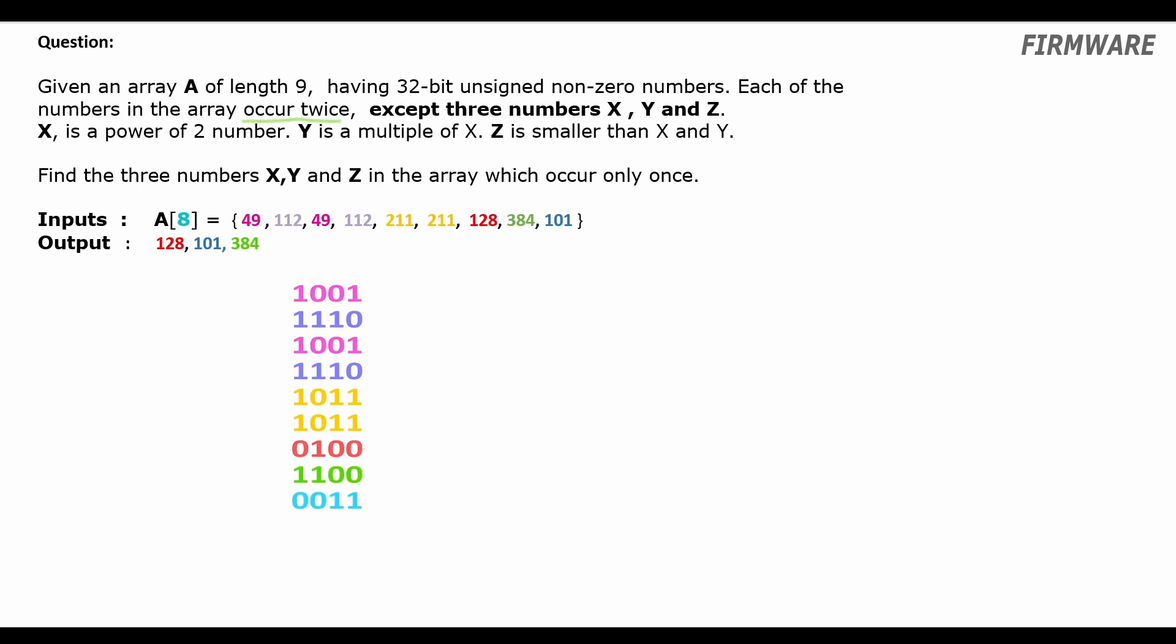Here in this example we have 128, 384, 101 occurring only once in the array whereas the remaining numbers occur twice. Also, these three numbers will have some unique properties. One of them is a power of two number, we call it X. The other one is a multiple of X and we call it Y. And the third number, Z is smaller than X and Y.